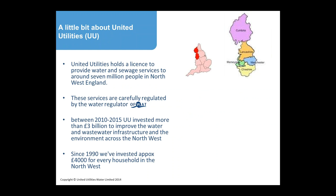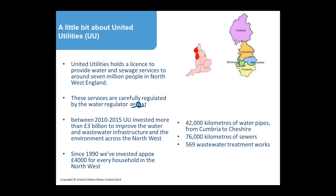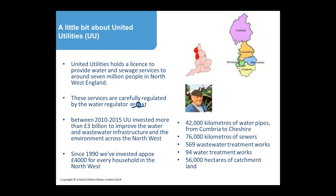Since 1990, we've spent about 4,000 pounds for every household in the northwest. Just to give you an idea of the scale, we're talking about 42,000 kilometers of water pipe, 76,000 kilometers of sewers, a lot of wastewater treatment works, and 94 treatment works. If you don't know where the northwest is, here are a few characters — Fred Dibner and the Beatles — that you might be familiar with.